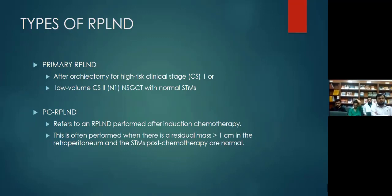Moving on to the types of RPLND according to Campbell Urology: first is primary RPLND, performed after orchiectomy for clinical stage 1 or low-volume clinical stage 2 — meaning N1: lymph nodal mass less than 2 cm or five or fewer positive nodes with normal serum tumor markers.